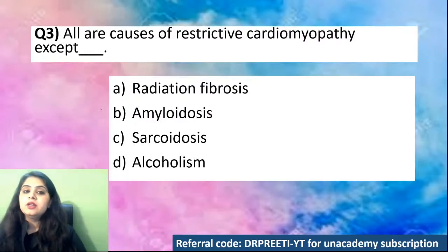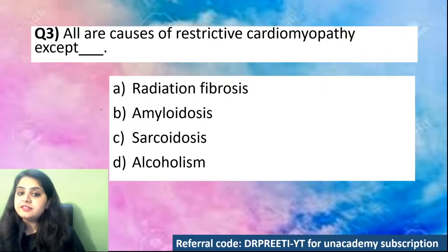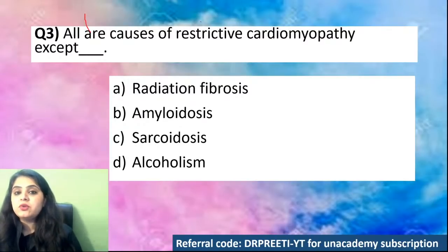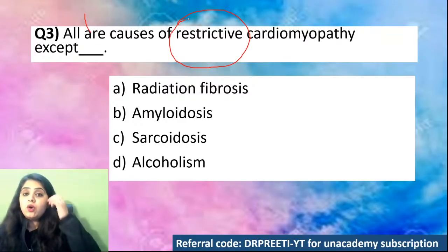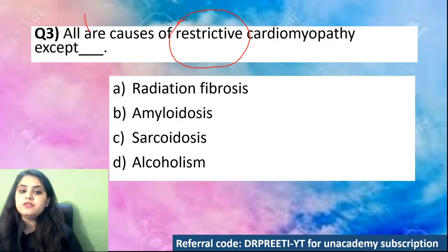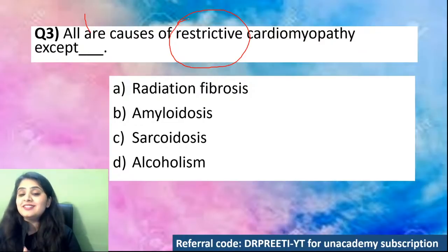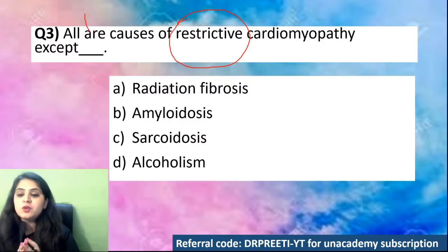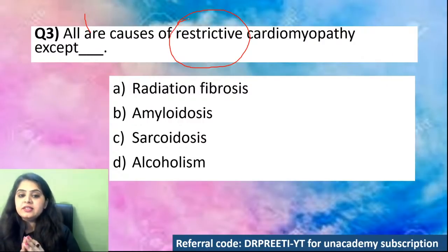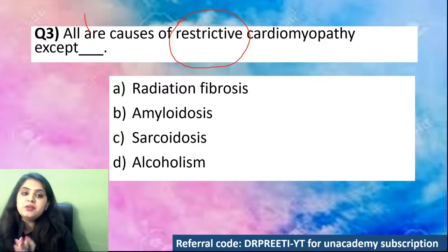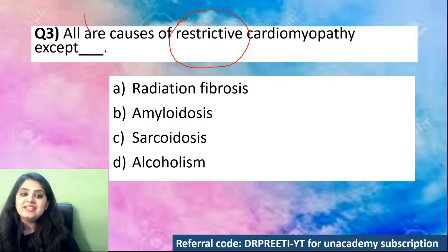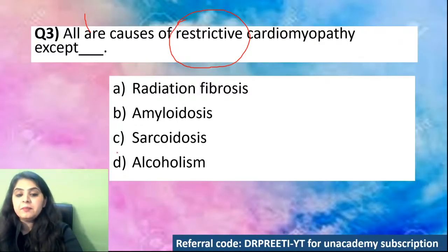Question number three: All are causes of restrictive cardiomyopathy except — radiation fibrosis, amyloidosis, sarcoidosis, or alcoholism? All are causes of restrictive cardiomyopathy except alcohol. I kind of ignored your comments earlier because I knew if I answered I would give away one question of the day. All are causes of restrictive cardiomyopathy except alcohol.